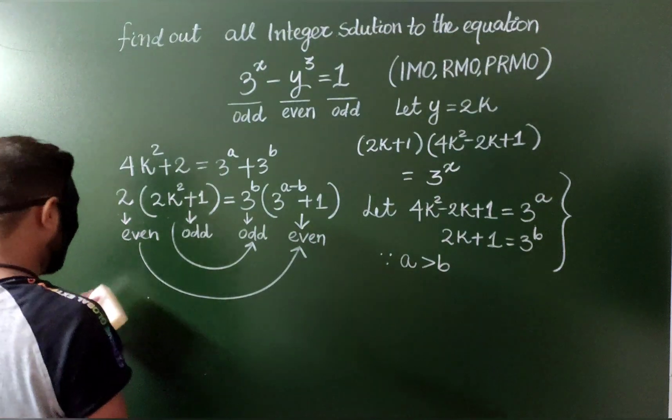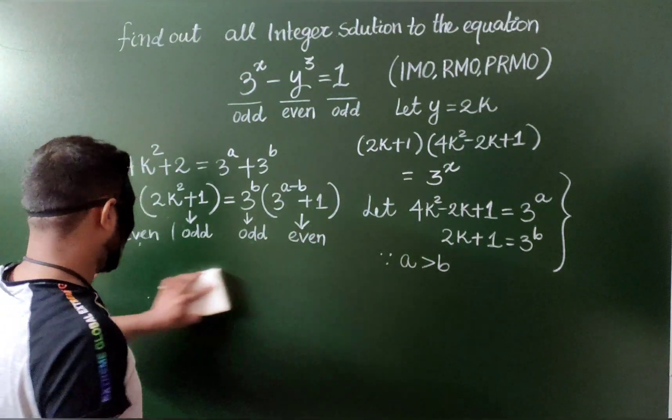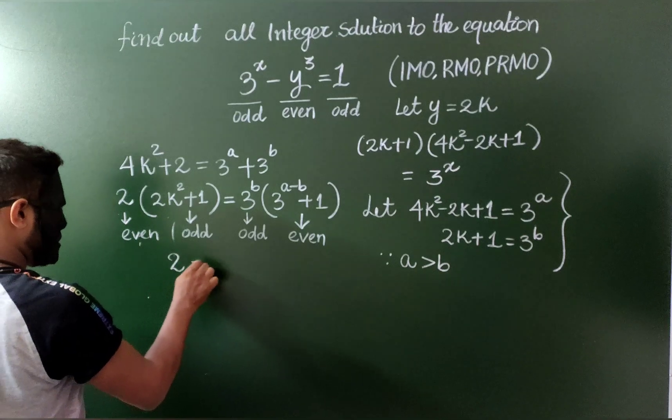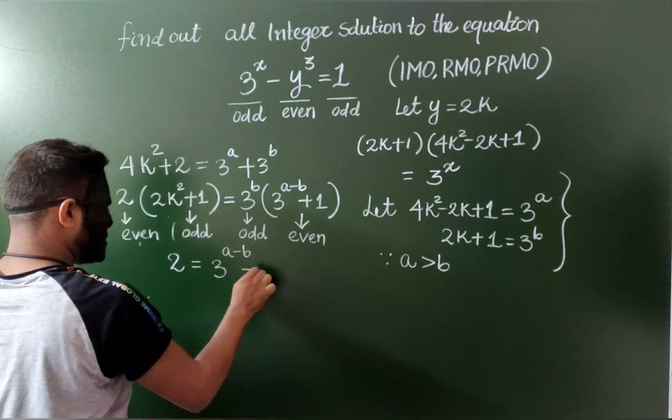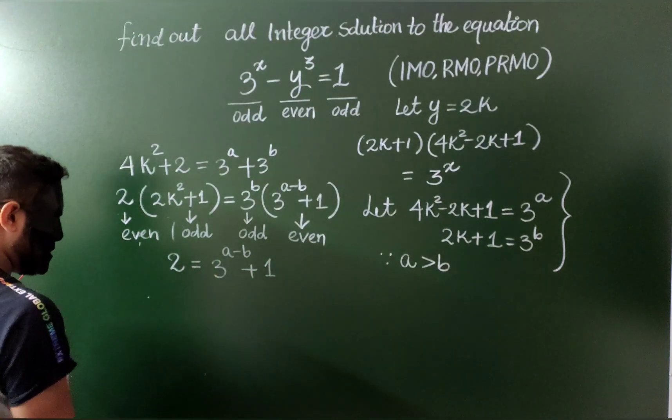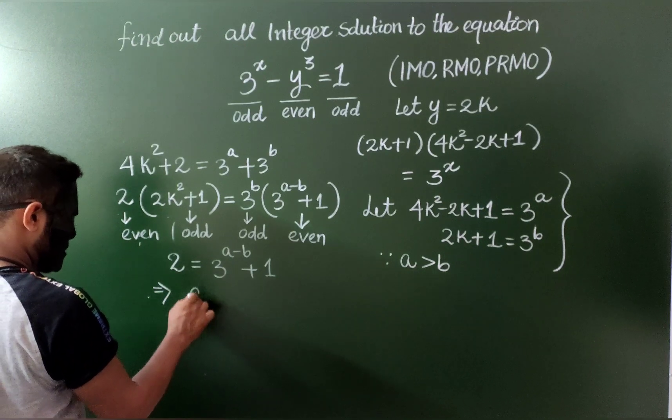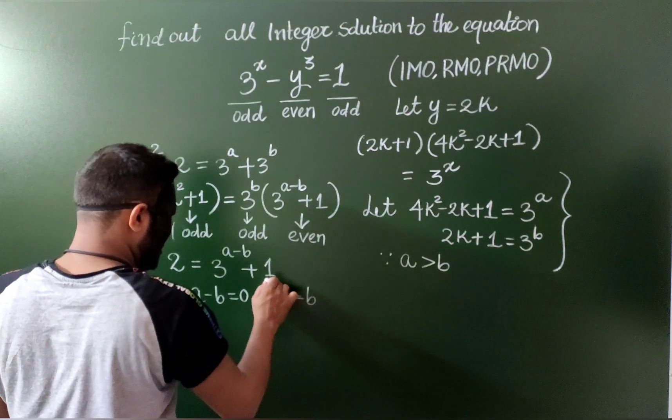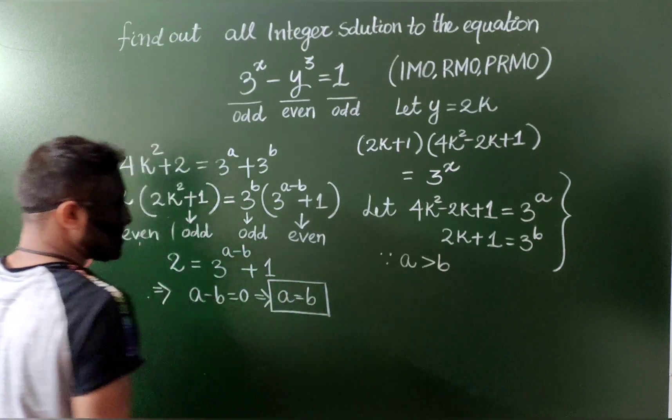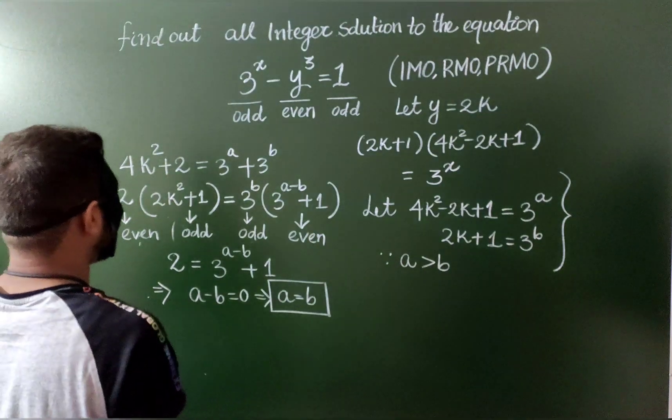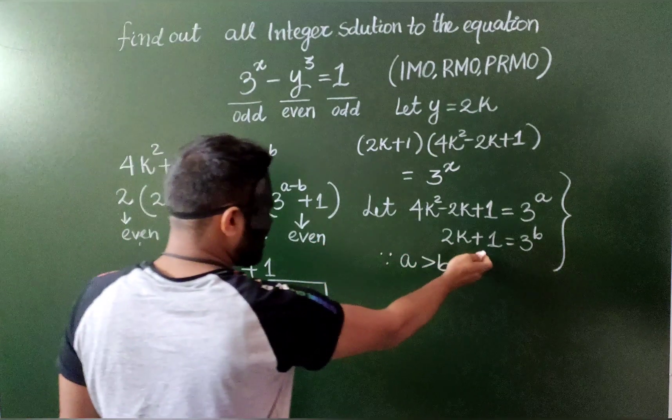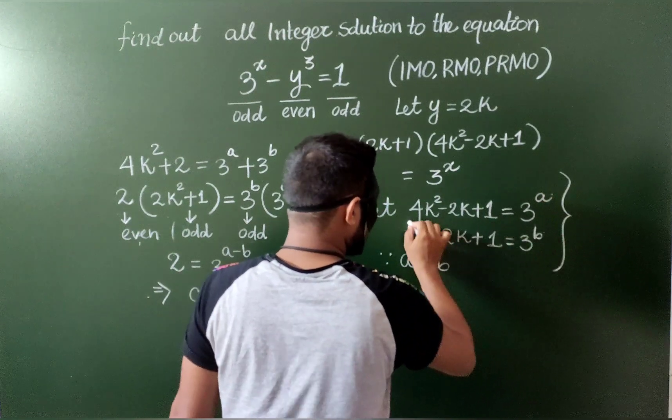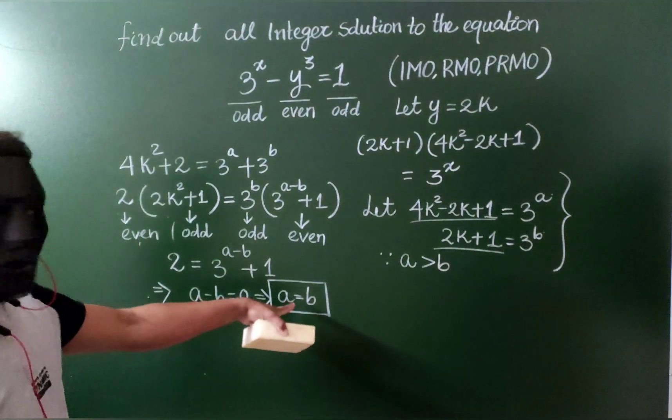Hence I can write that 2 equals to 3 to the power a minus b plus 1, and if you solve this question, this gives a minus b is equal to 0, therefore a is equal to b. We got our first information regarding a and b. It means both here the expressions are both same, because this is also a, this is also a, so both the expressions must be equal because a is equal to b.